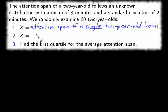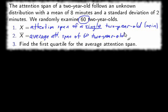The distribution of the averages is the average attention span of sixty two-year-olds. That's the difference between the underlying distribution and the distribution of the averages. The distribution of the averages is an average and there's a sample size to it.